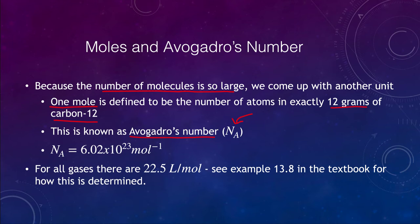It is equal to 6.02 times 10 to the 23rd molecules per mole. That is how many molecules are in one mole. This helps get these numbers down to something more manageable. Our brains don't like to wrap themselves around such large numbers. For gases, there are 22.5 liters per mole. You can look at example 13.8 in the textbook to see how this comes about. 22.5 liters of a gas will represent one mole of that gas.